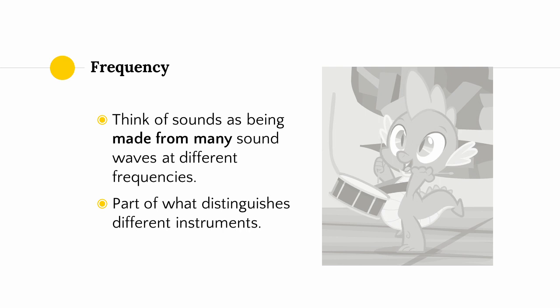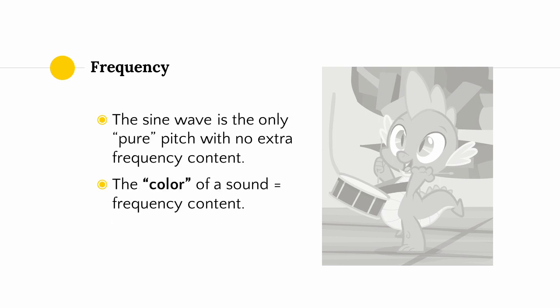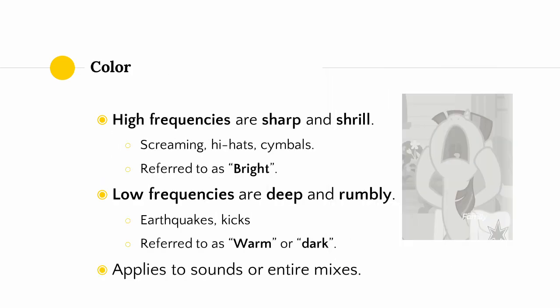That's part of what makes a piano sound like a piano as opposed to a saxophone. The only instrument that doesn't have any additional frequency content compared to the pitch we perceive is the synthesized sine wave. In mixing, the color of a sound refers to its frequency content and whether it's predominantly made from high or low frequency sound waves. High frequencies make sounds sharp and shrill — examples of sounds with predominantly high frequency content are screaming, hi-hats, and cymbals. In mixing, we use the term bright to describe sounds with a lot of high frequency content.